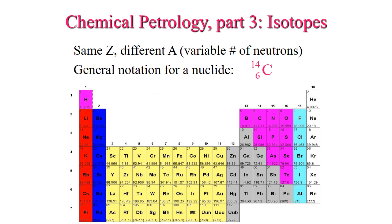When we refer to an isotope, we are referring to an element that has the same number of protons but a different number of neutrons and therefore a different mass.